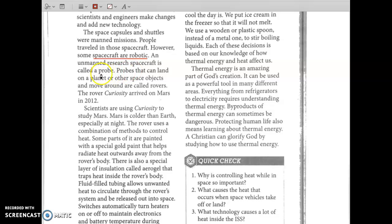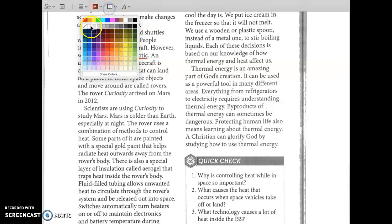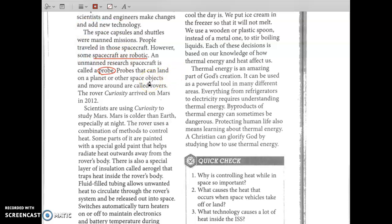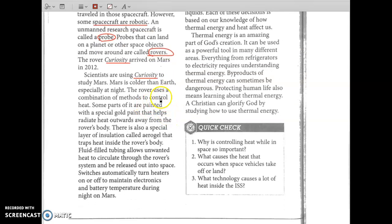An unmanned research spacecraft is called a probe, meaning there's no people inside it. Probes that can land on a planet or other space objects and move around are called rovers. Rovers are a type of probe. The rover Curiosity arrived on Mars in 2012. Scientists are using Curiosity to study Mars. Mars is colder than Earth, especially at night. The rover uses a combination of methods to control heat. Some parts of it are painted with a special gold paint that helps radiate heat outwards away from the rover's body. There's also a special layer of insulation called aerogel that traps heat inside the rover's body. Fluid-filled tubing allows unwanted heat to circulate through the rover system and be released out into space. Switches automatically turn heaters on or off to maintain electronics and battery temperature during night on Mars.